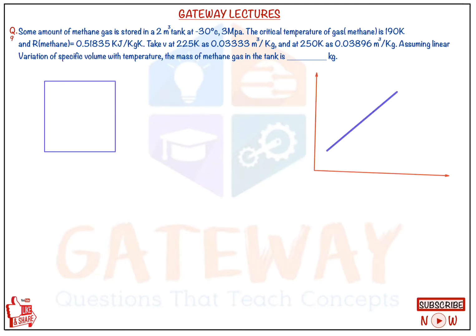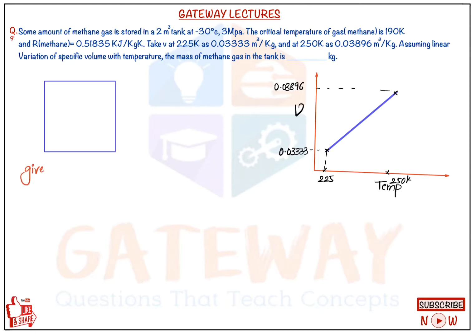Assuming linear variation of specific volume with temperature — temperature is on the x-axis and specific volume is on the y-axis. At 225 kelvin, the specific volume is 0.03333 m³/kg, and at 250 kelvin it is 0.03896 m³/kg. We need to calculate the specific volume at minus 30 degrees centigrade, which is 243 kelvin. The tank volume is 2 m³ and pressure is 3 megapascals.